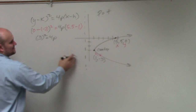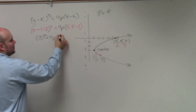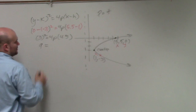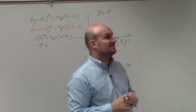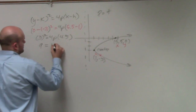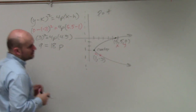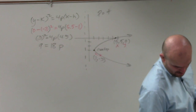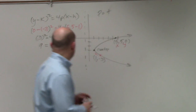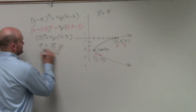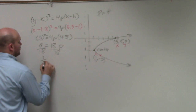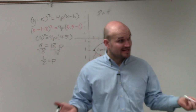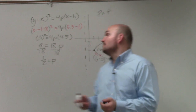So 4p, and then this becomes 4.5. So 9 equals 4 times 4.5, that's going to be 18. Then we just divide by 18: one half equals p. Is p positive? Yes. So I can be relatively sure that I did at least something right.